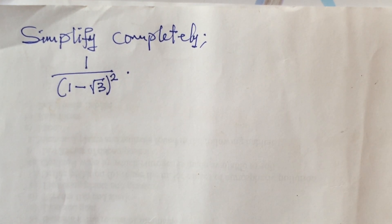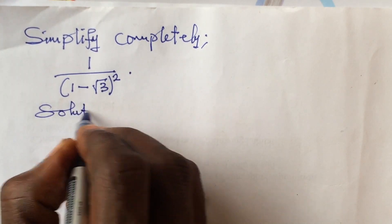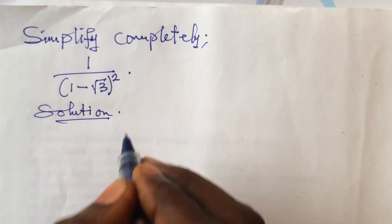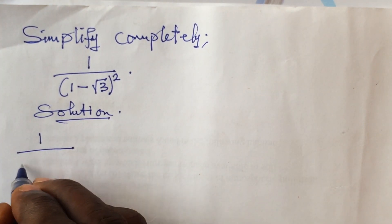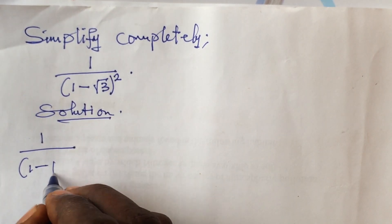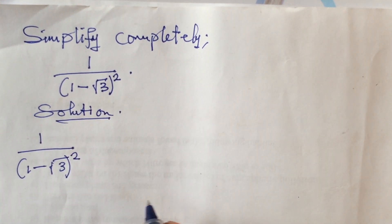Let's put down our solution. We write the question which is 1 over (1 minus root 3) to the power of 2. If you look at the denominator, this can be written as 1 over (1 minus root 3) times (1 minus root 3).